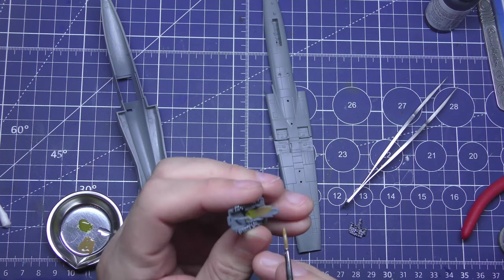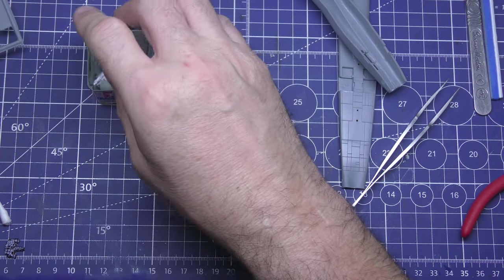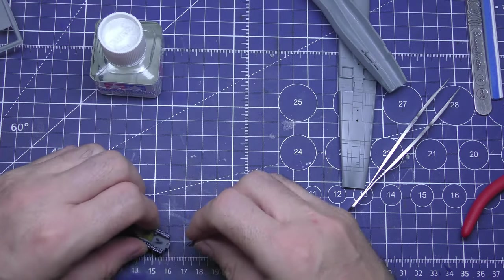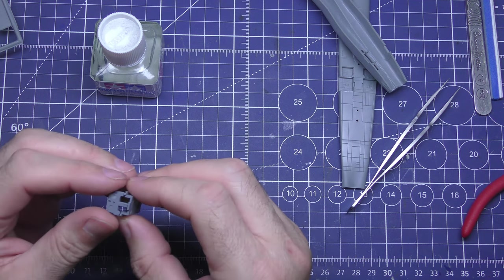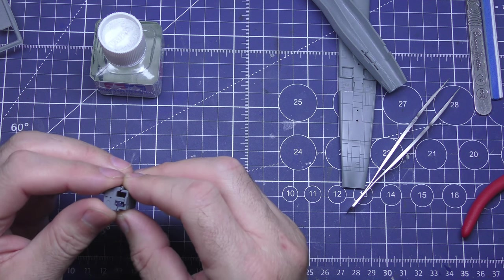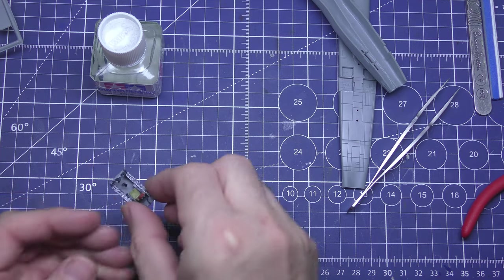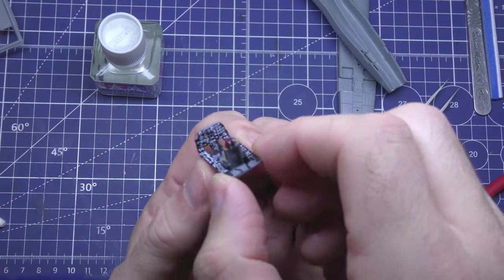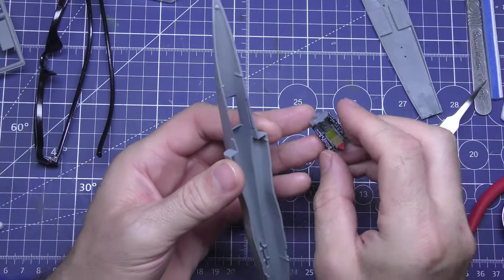They're absolutely fantastic for spraying, but I don't find them as good for painting. And gluing the actual dash into the cockpit tub. And that's my Tamiya glue—it's a little bit thicker than the extra thin.